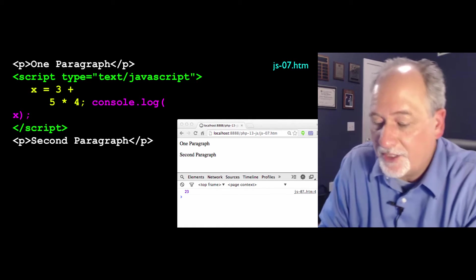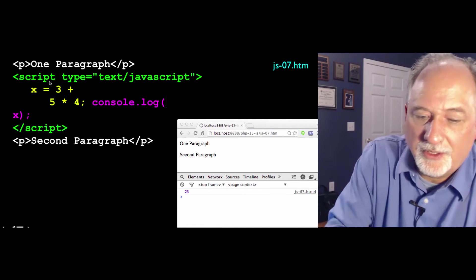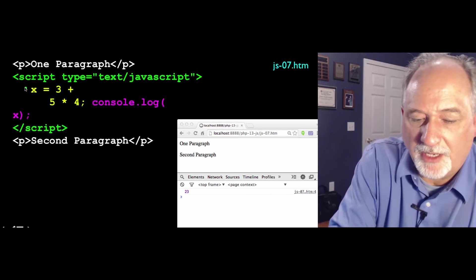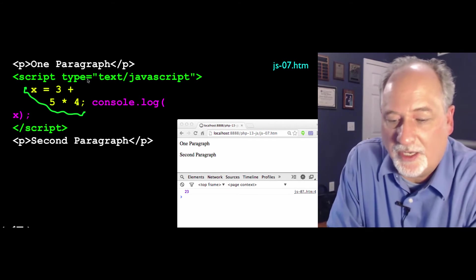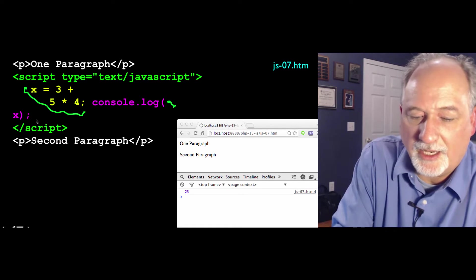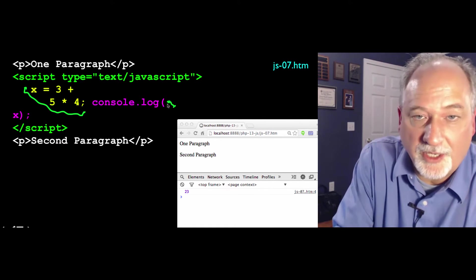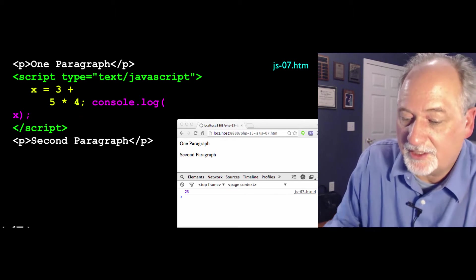Here's a good example of white space that simply does not matter. Here is x equals 3 plus 5 times 4. It just doesn't matter if there's a new line or lots of white space. The same is true if there's a new line. It's as if that white space and new line doesn't exist.